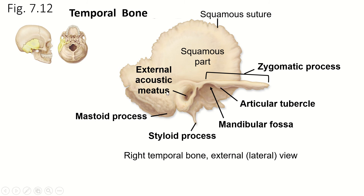There's an articular tubercle that is going to help articulate with the mandible. And then the mandibular fossa — it's medial to the articular tubercle — is this indentation right here. The main part of the mandible is going to articulate into that little fossa. Remember, fossa is an indentation. Then we have the external acoustic meatus — this is your ear hole, the outer ear hole that goes to your tympanic membrane.